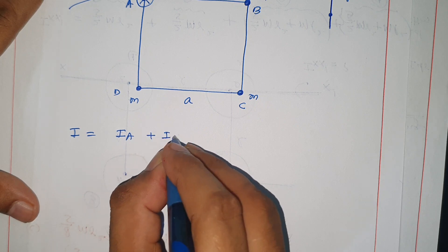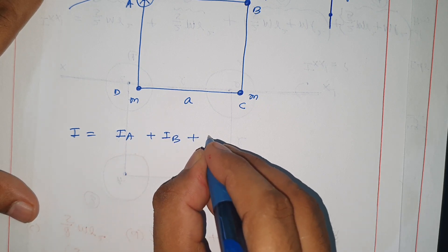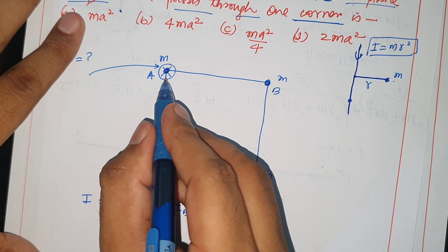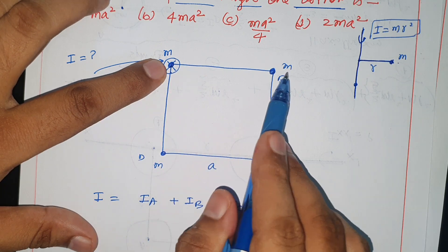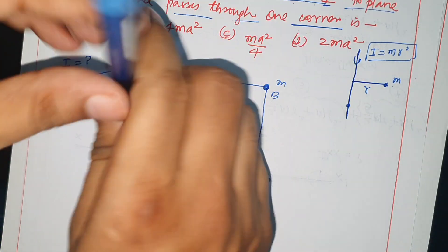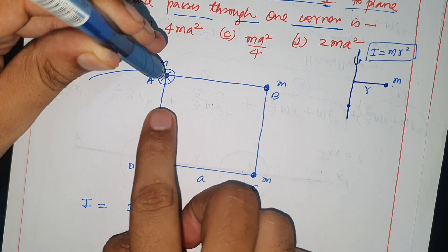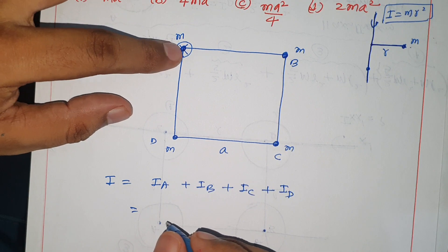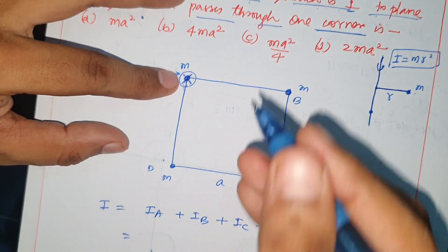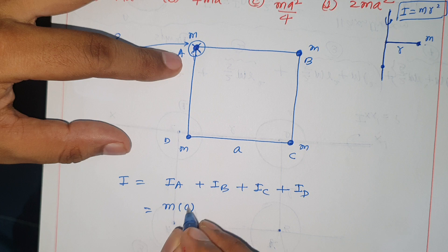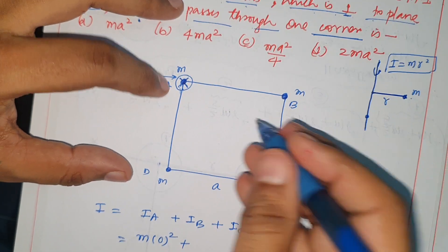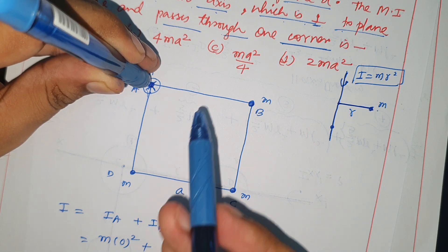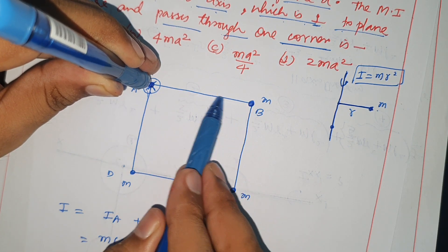Particle B, particle C, and particle D. For particle A, I equals m times zero squared. Plus I_B - we take the axis at A, the perpendicular distance to B is this. This is the perpendicular distance.